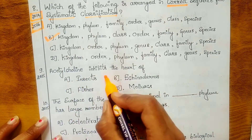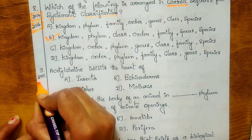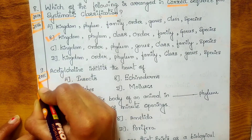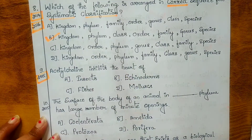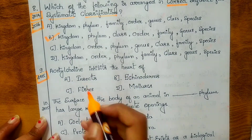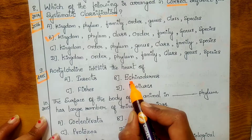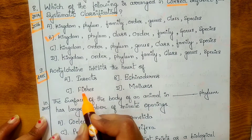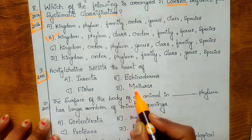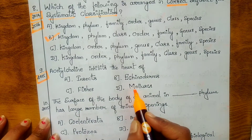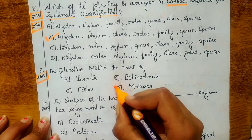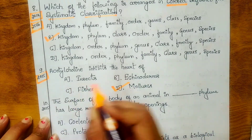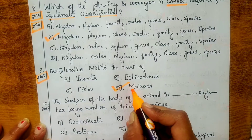Ninth question, from 2015: acetylcholine inhibits the heart of which organism? Options are: insects, echinoderms, fishes, and mollusca. The answer is the fourth option — mollusca. Acetylcholine inhibits the heart of mollusca.